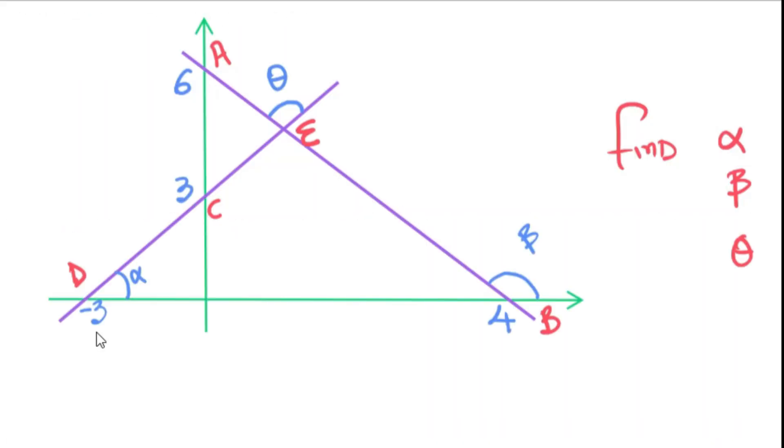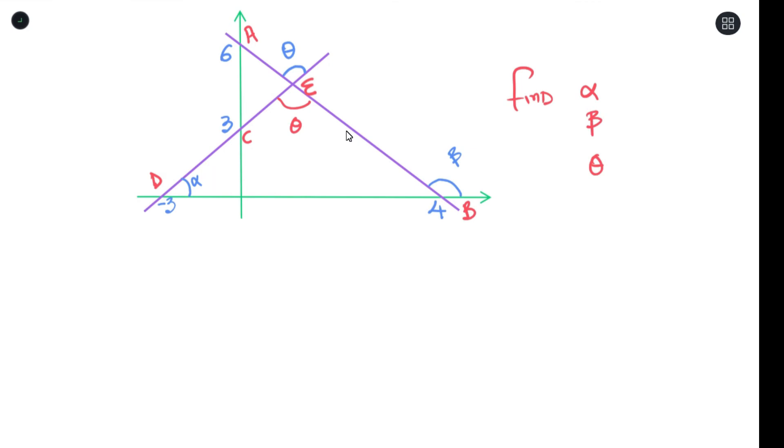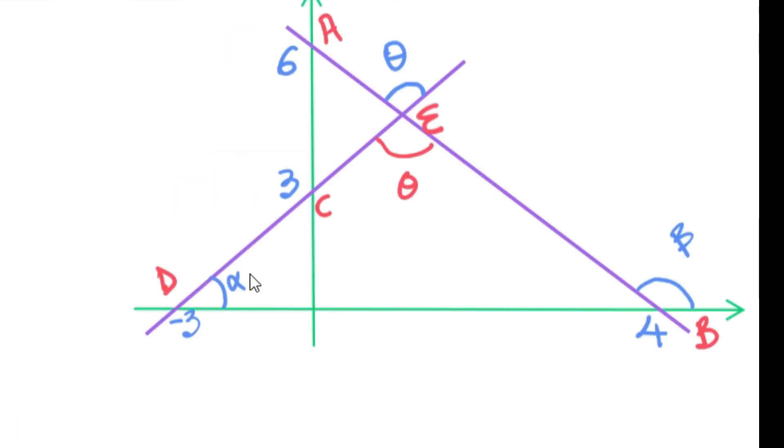We have this question over here. We see we have A, B and D, E creating a triangle. Now we are asked to find our alpha, our beta and our theta. Okay, so let us start with the alpha. Now alpha over here is the angle created from line DE.